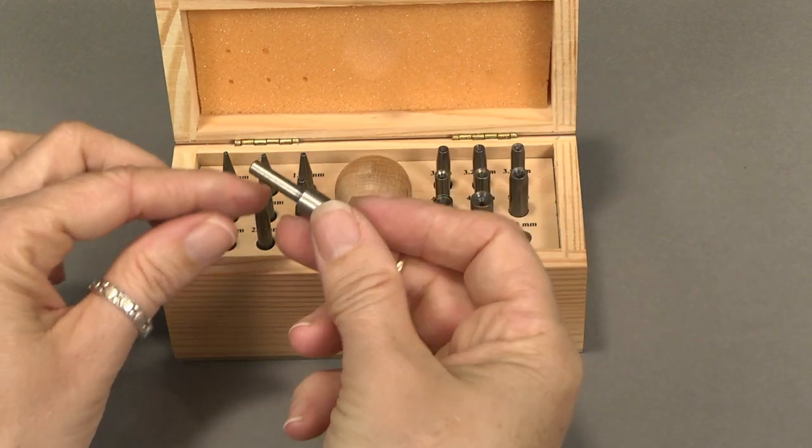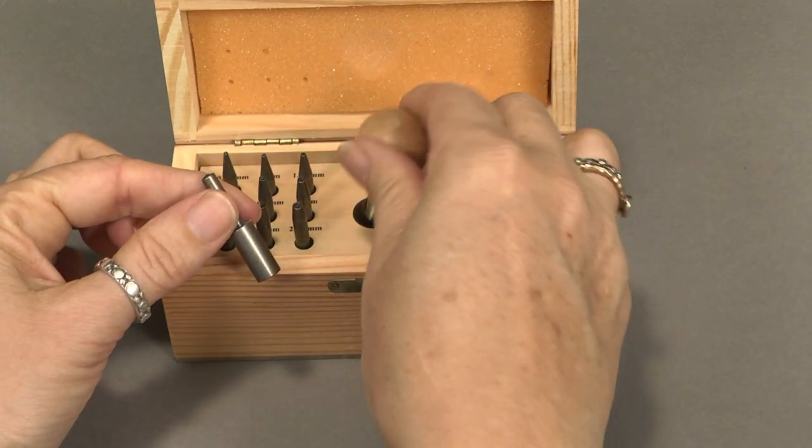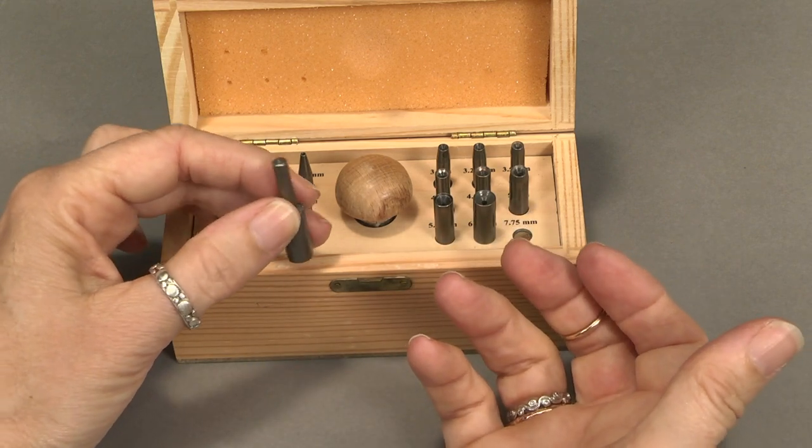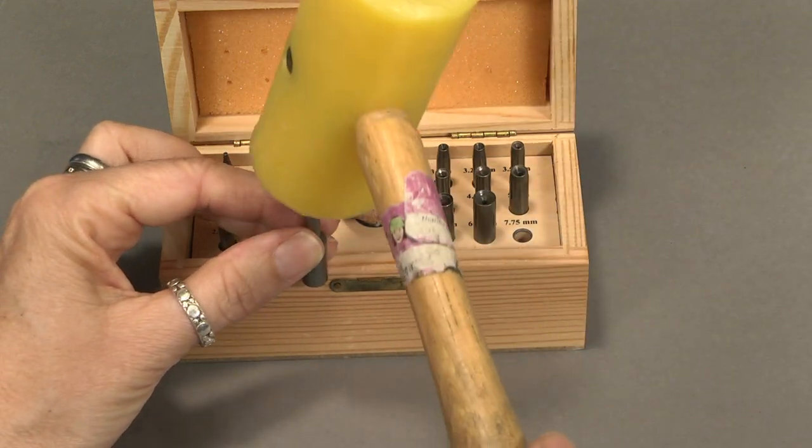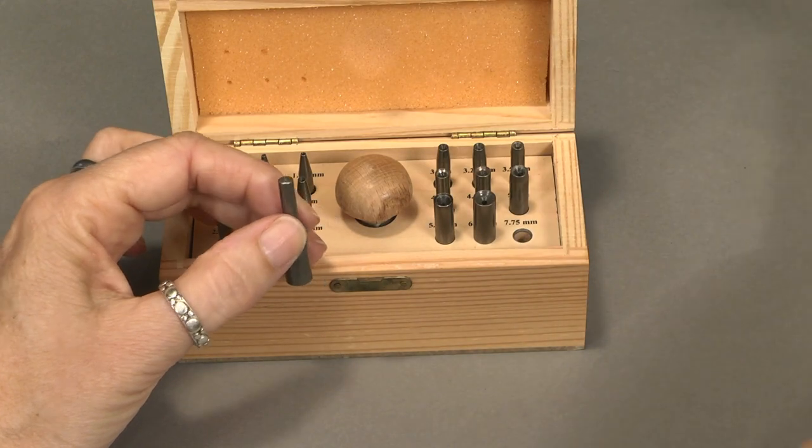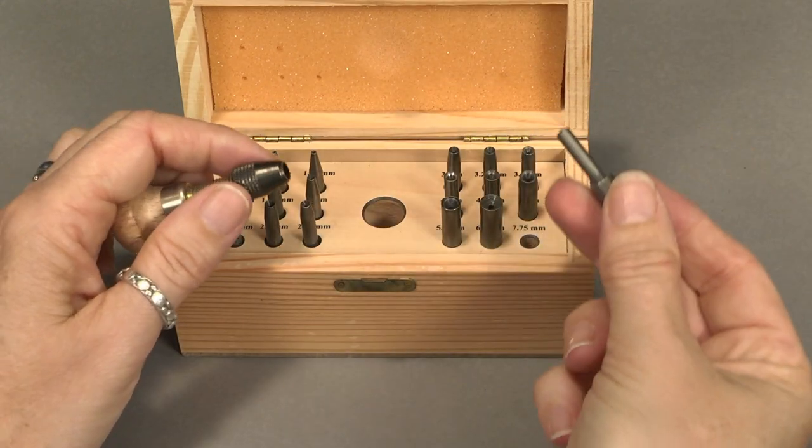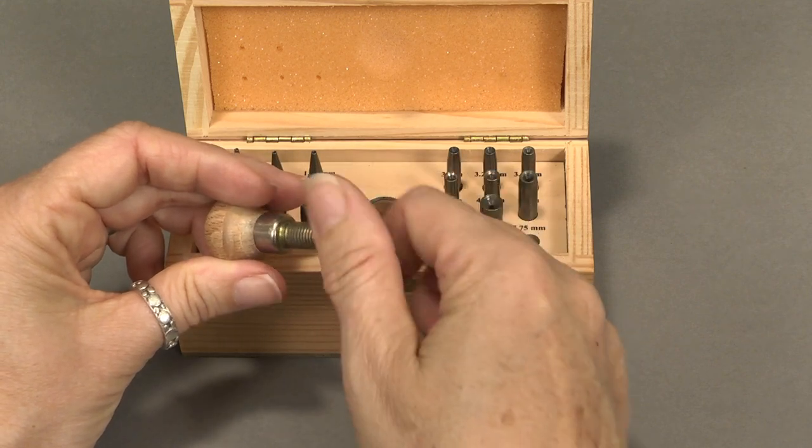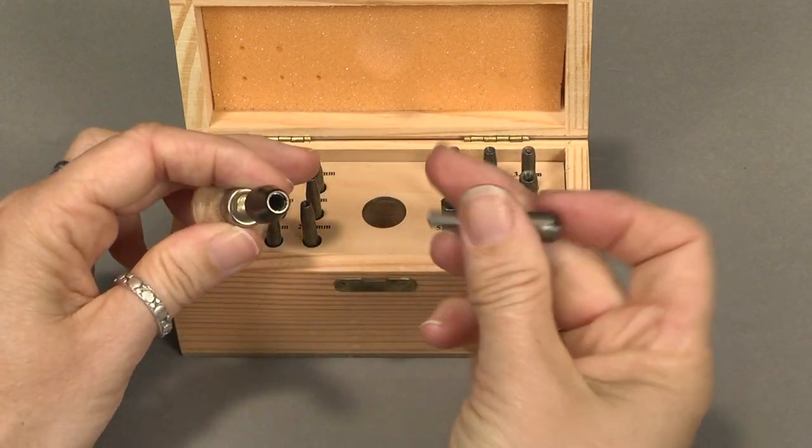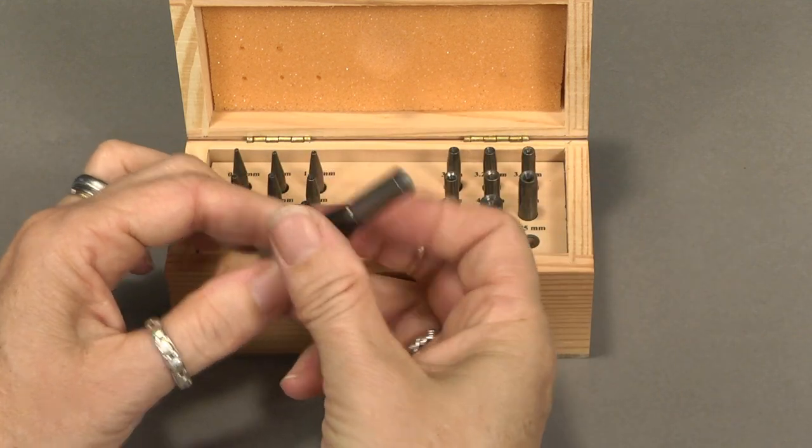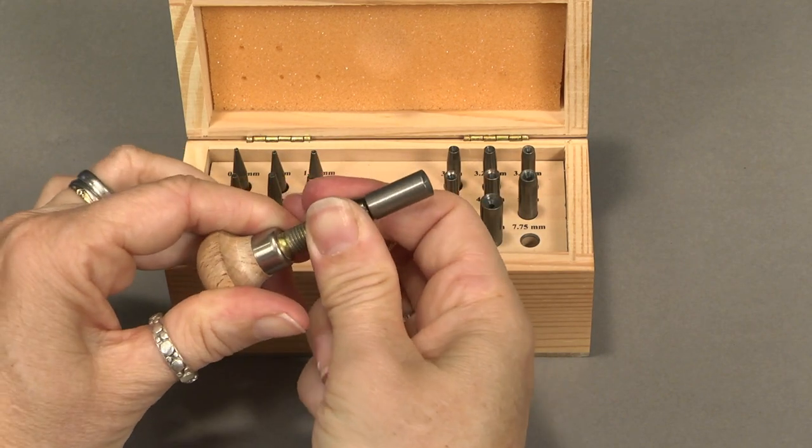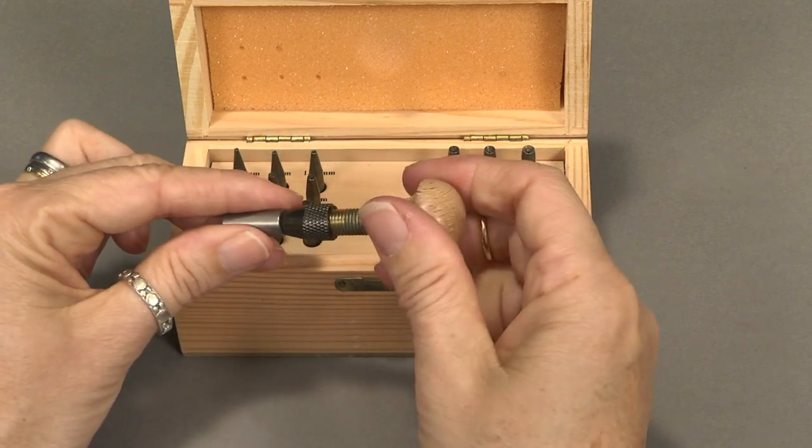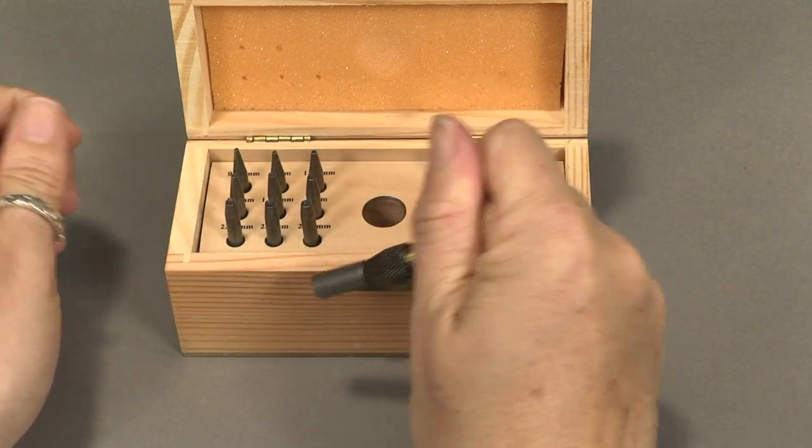And you can either use the little handle or not. Sometimes if I'm using a stone that I know is very sturdy and not going to break, I'll just leave it outside the handle and tap it with my plastic mallet. Or you can use the handle. It's got a nice chuck here that opens and closes to tighten down on it. You slide the little piece in and tighten it down. And then if you're doing it by hand, you've got a really nice grasp on this and get good leverage on it.